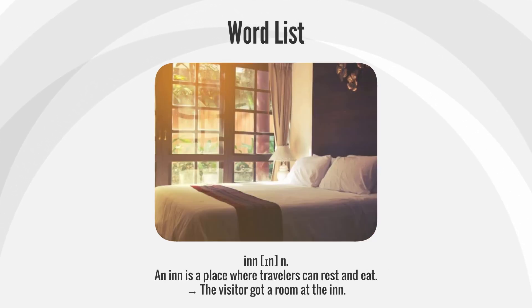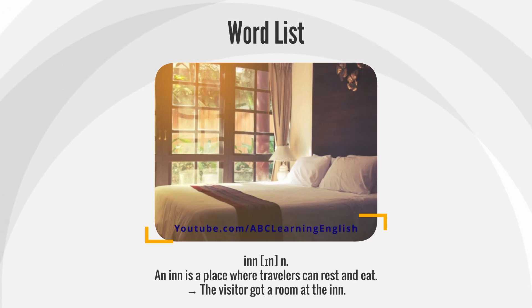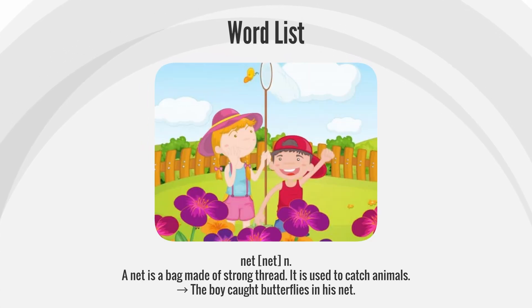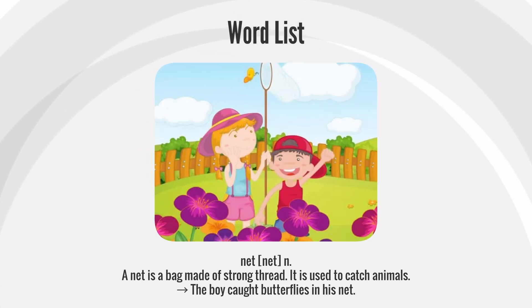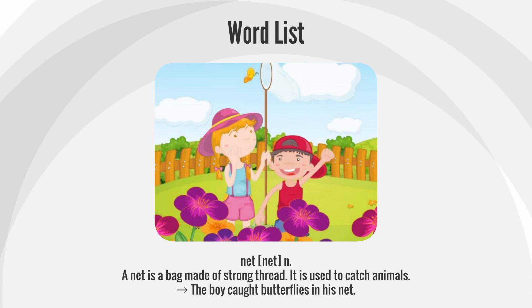Inn — an inn is a place where travelers can rest and eat. Example: The visitor got a room at the inn. Net — a net is a bag made of strong thread; it is used to catch animals. Example: The boy caught butterflies in his net.